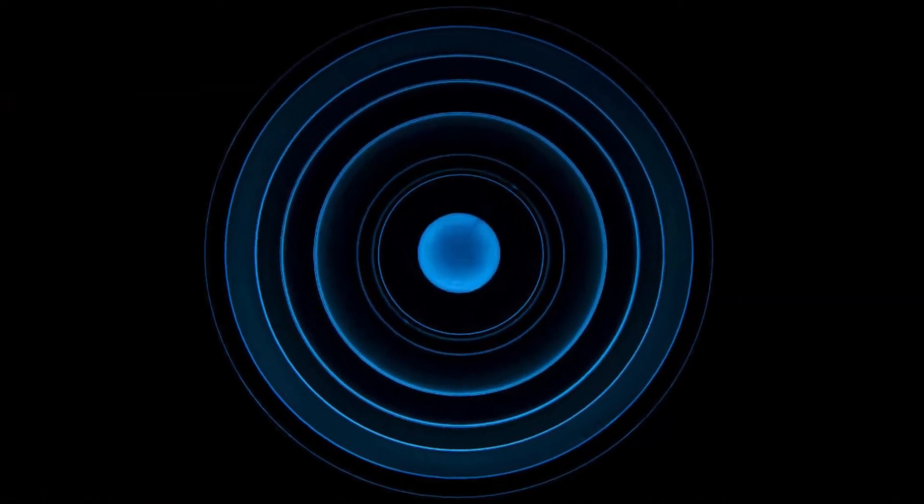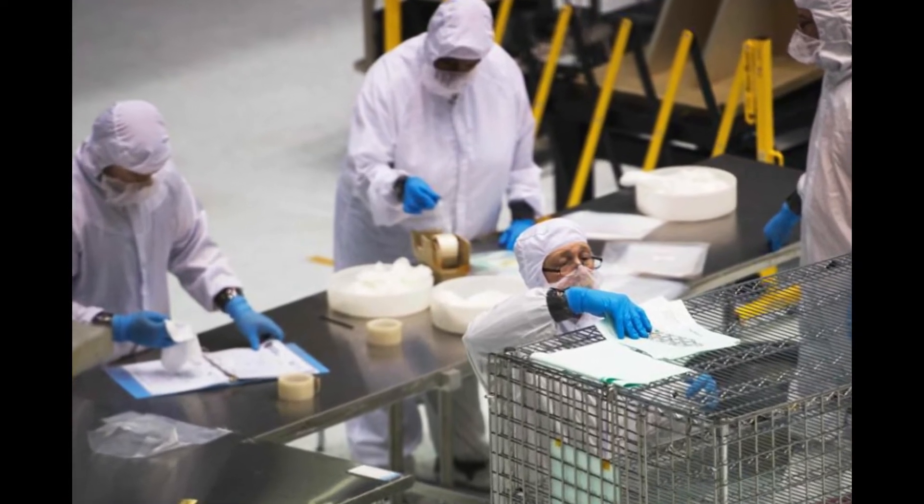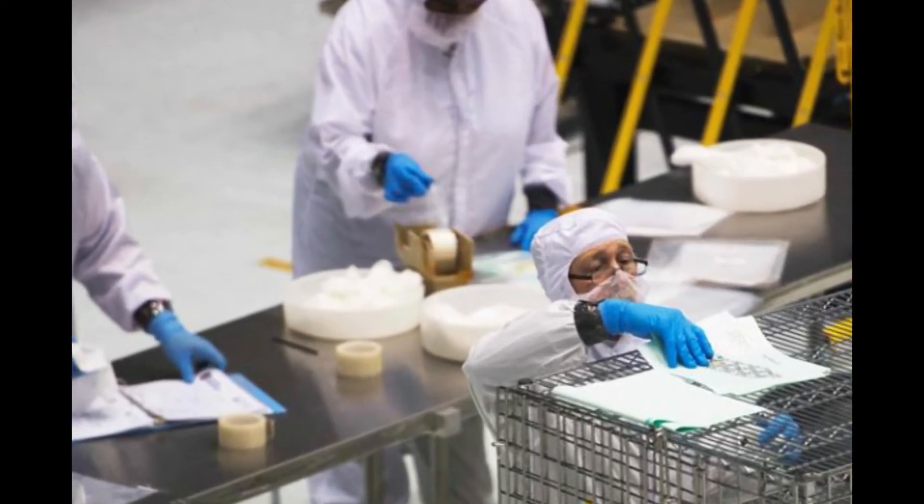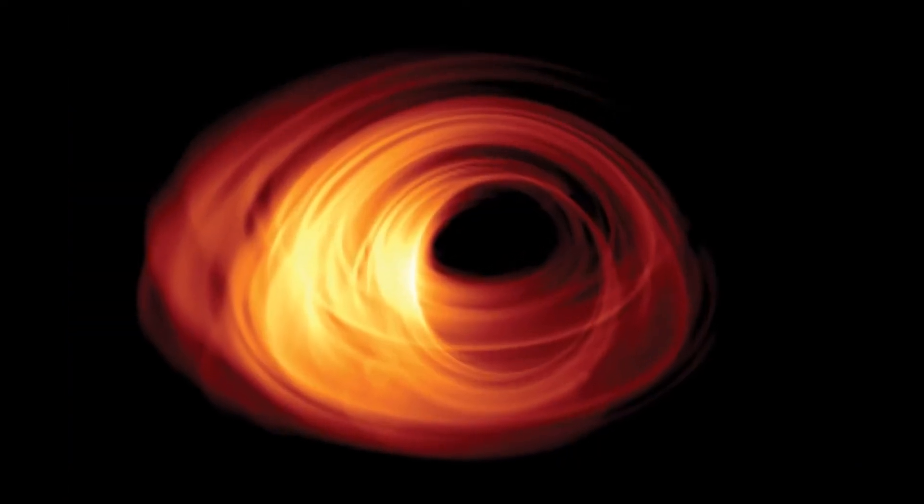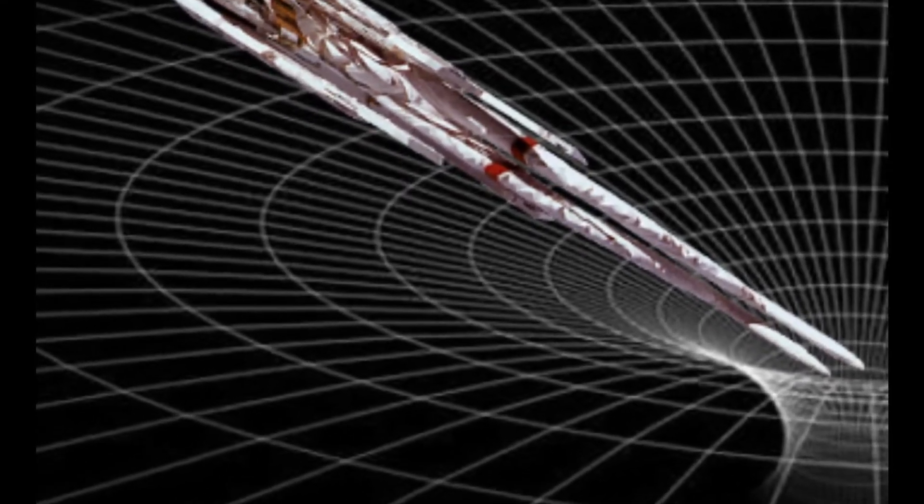At the center of every black hole is a point of infinite density called a singularity. It's what gives black holes a strong gravitational pull. And for decades, scientists thought singularities were all the same, so anything that passed the event horizon would be destroyed the same way, by being stretched and pulled like an infinitely long piece of spaghetti.